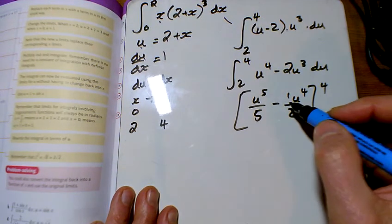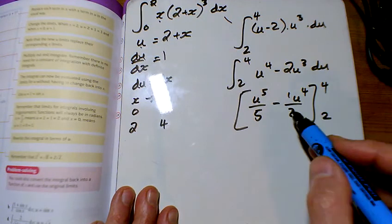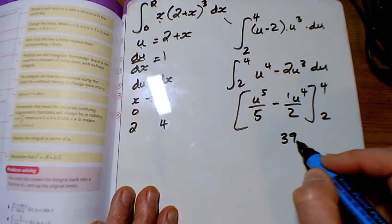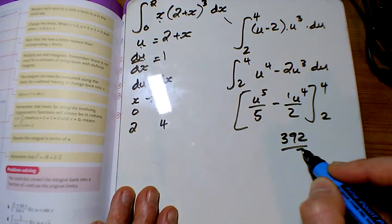So sticking the 4 into all of that, and then sticking the 2 into all of that, trust me, I've got 392 over 5.